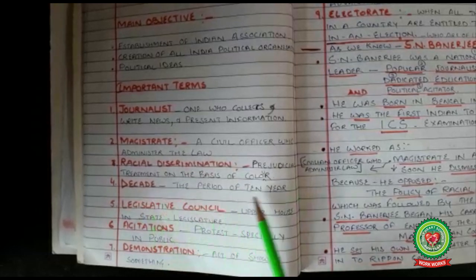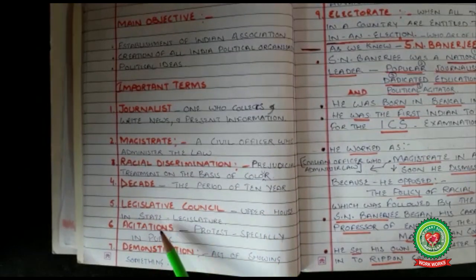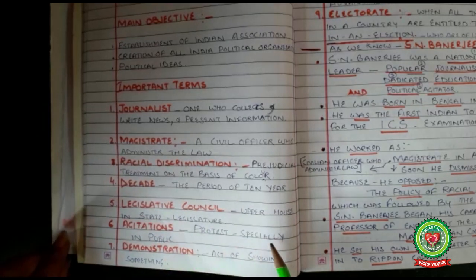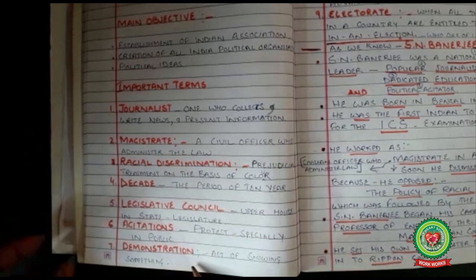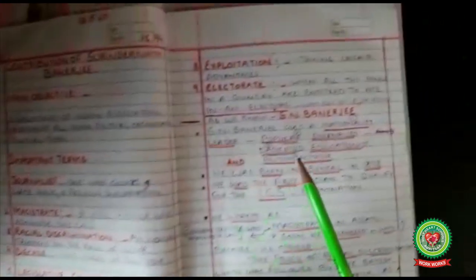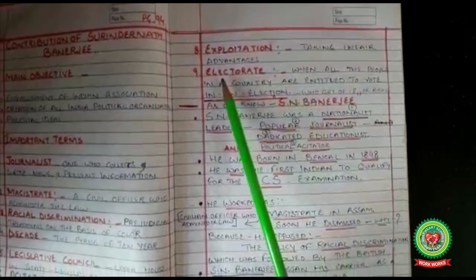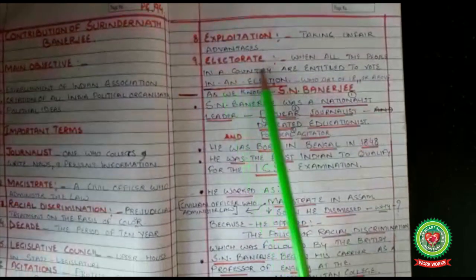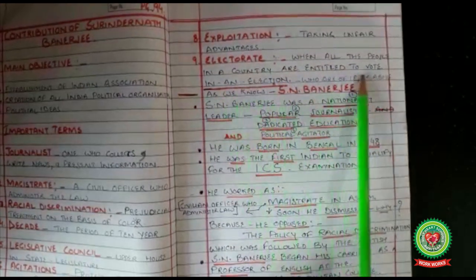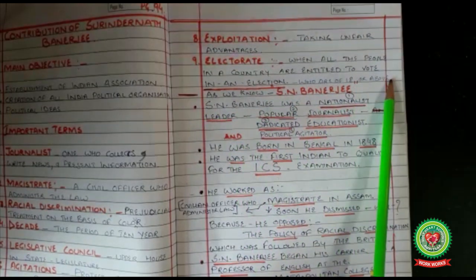Decade: the period of 10 years. Legislative council: upper house of state legislature. Agitation: protest, especially in public. Demonstration: act of showing something. Exploitation: taking unfair advantages. Electorate: when all the people in a country are entitled to vote in an election who are of 18 or above.